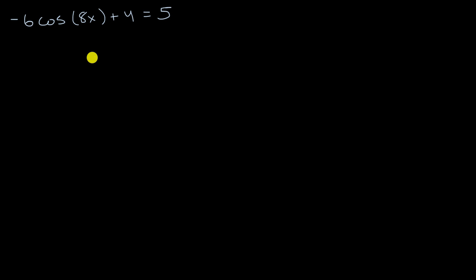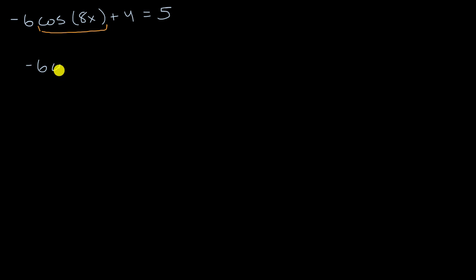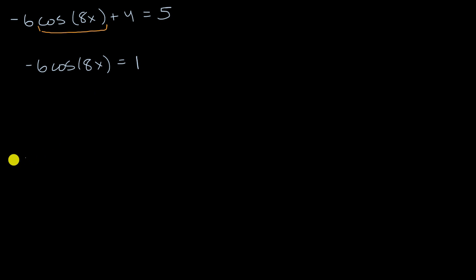All right, now let's work through this together. We want to isolate the cosine of eight X. A good way to do that is to first subtract four from both sides. That gives us negative six times cosine of eight X. Subtracting four from five gives us one.